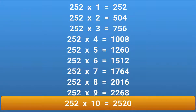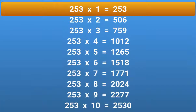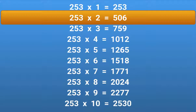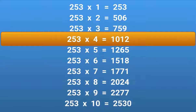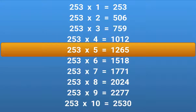253 × 1 = 253. 253 × 2 = 506. 253 × 3 = 759. 253 × 4 = 1012. 253 × 5 = 1265. 253 × 6 = 1518.